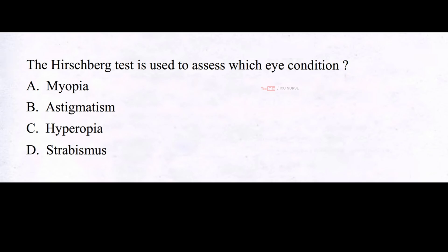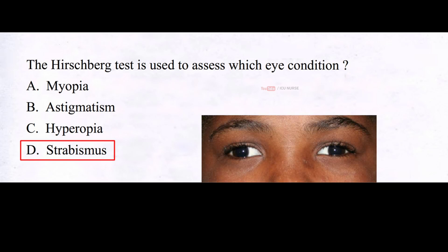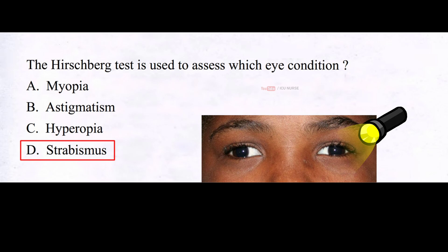The Hirschberg test is used to assess which eye condition? A. Myopia. B. Astigmatism. C. Hyperopia. D. Strabismus. The correct answer is D: strabismus. The Hirschberg test assesses eye alignment and possible strabismus in patients. By examining the corneal light reflex, it helps determine if one eye deviates or turns. A light source is shown into the patient's eyes and the reflection on each cornea is observed. Ideally, the reflections should overlap; if not, it suggests strabismus or misalignment. The Hirschberg test aids in diagnosing eye conditions and guiding treatment options.